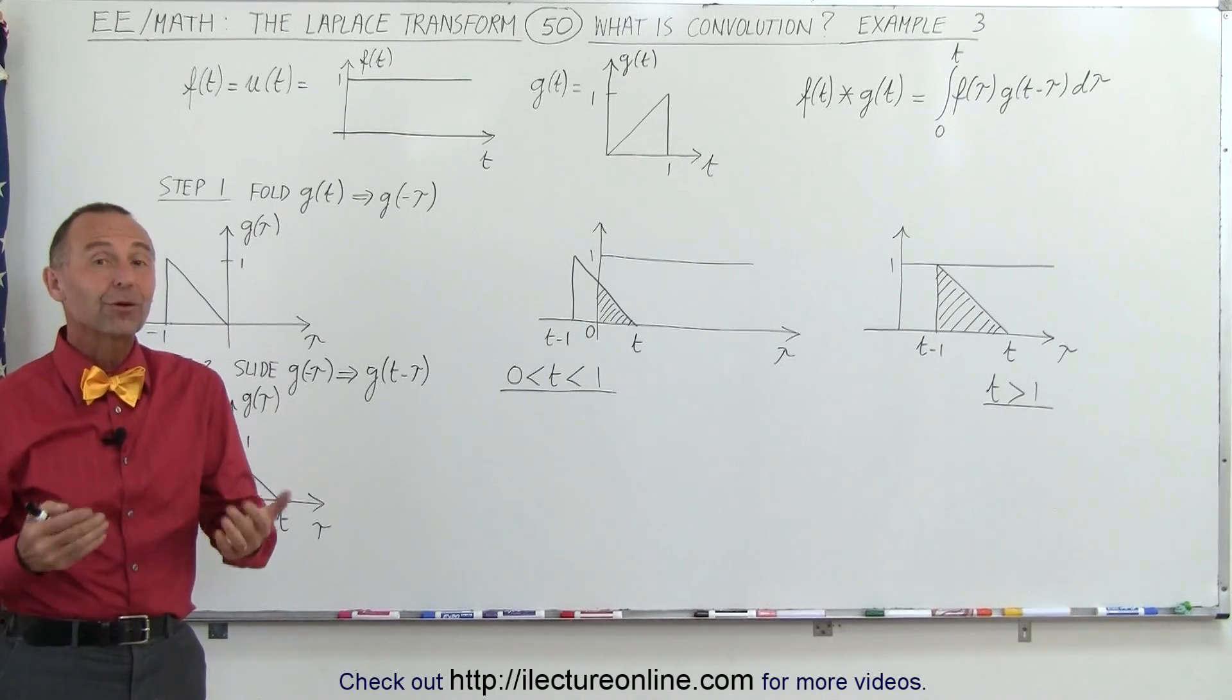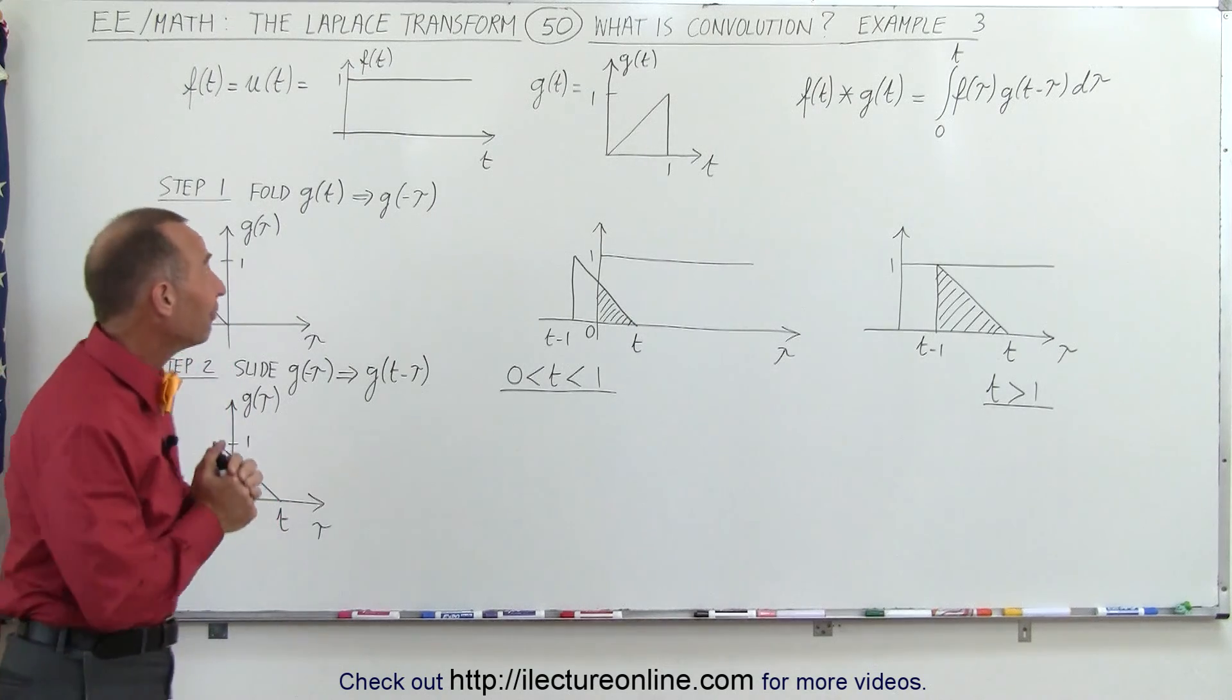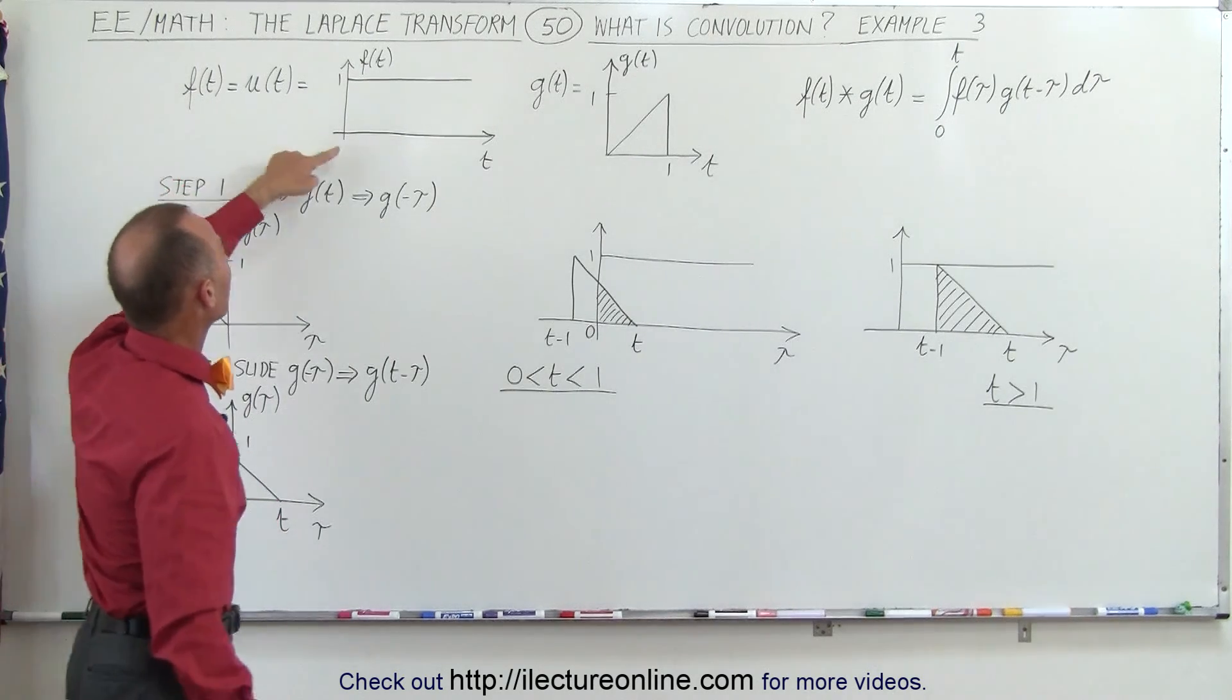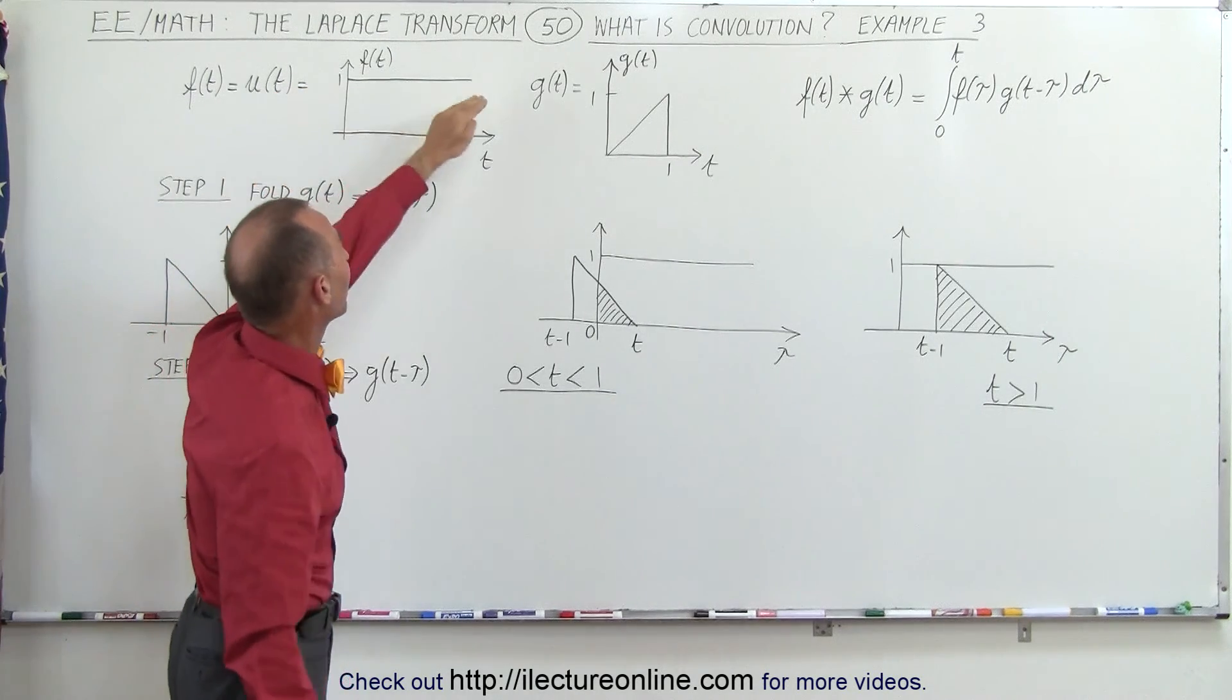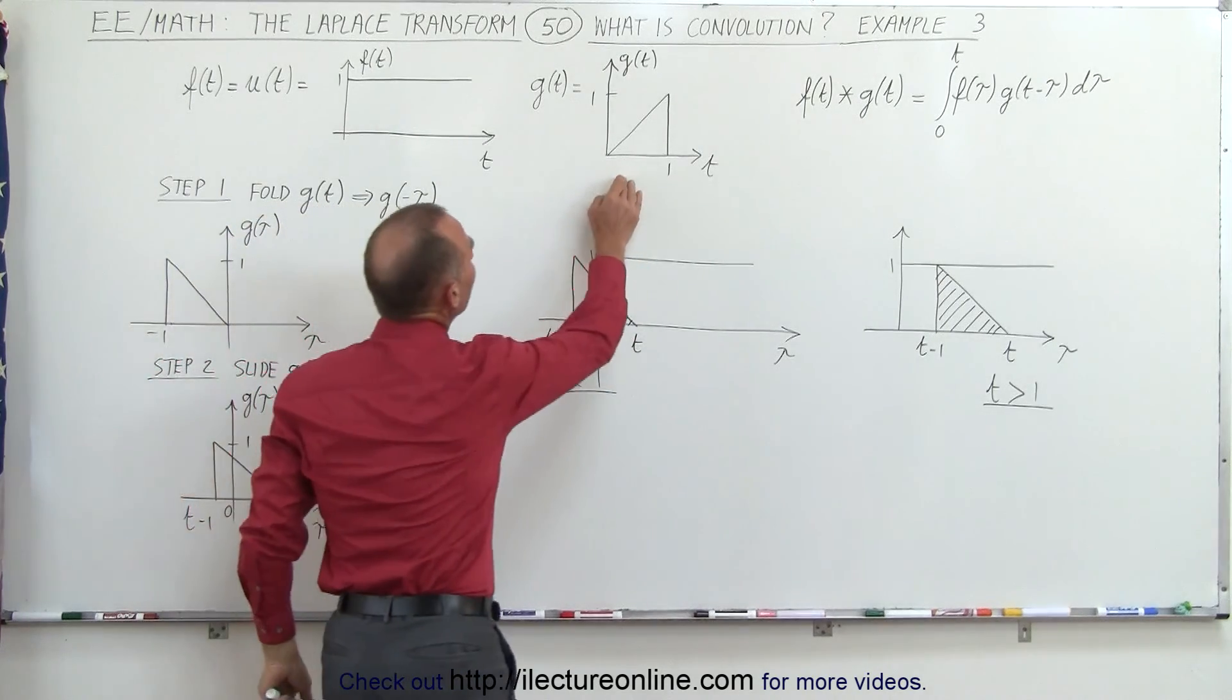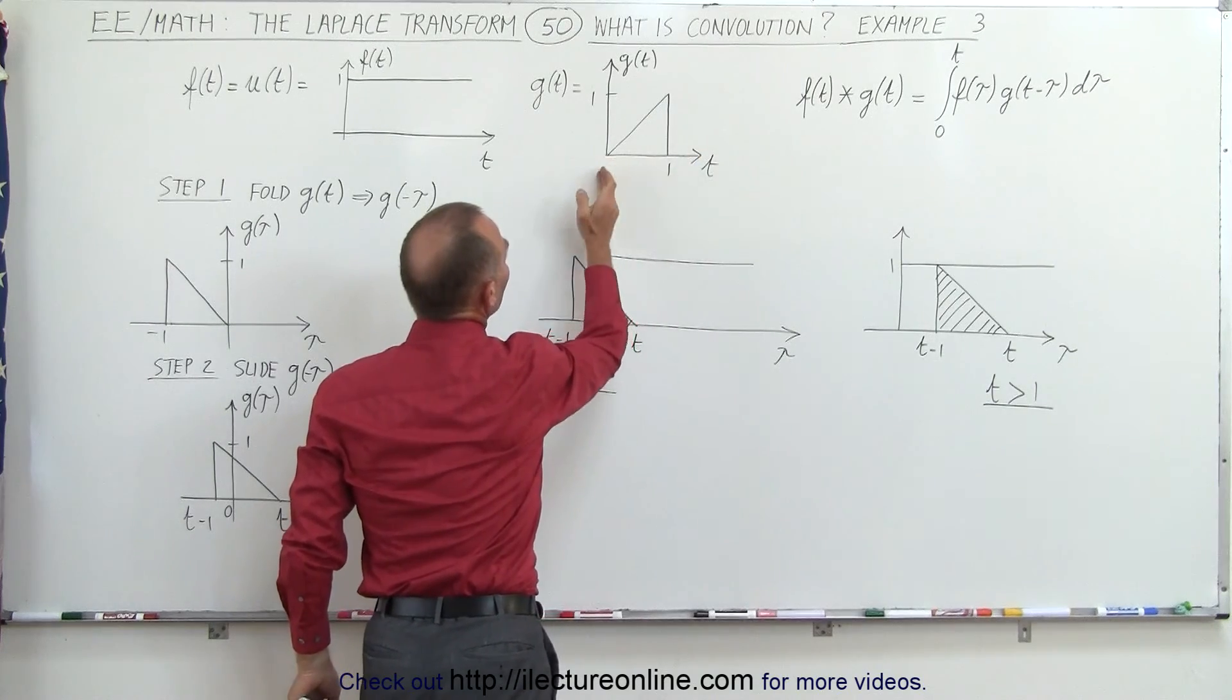Welcome to ElectronLine. Here's our third example of how to find the convolution of two functions, f and g. f is defined as a unit step function. It becomes equal to 1 when time passes 0, and remains 1 forever, so it's the unit step function. g of t is a wedge. It starts at 0 and goes up to value of 1 in the span from 0 to 1.